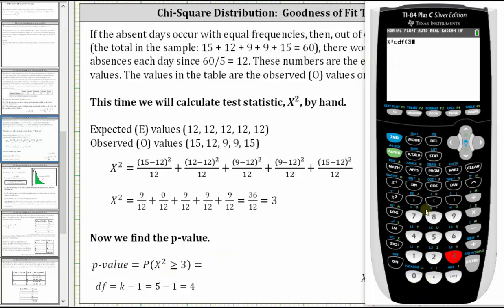Because we have a right-tailed test, the lower bound is 3, comma, we exaggerate the upper bound, for example, 999999, comma, the degrees of freedom, which are 4. Close parenthesis and enter. To four decimal places, we have approximately 0.5578.